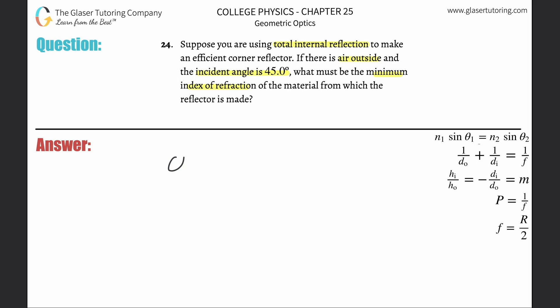I'm going to use the formula that we developed there. The critical angle is equal to the inverse sine of n2 over n1, which is the index of refraction of the refracted ray divided by the index of refraction for the incident ray.